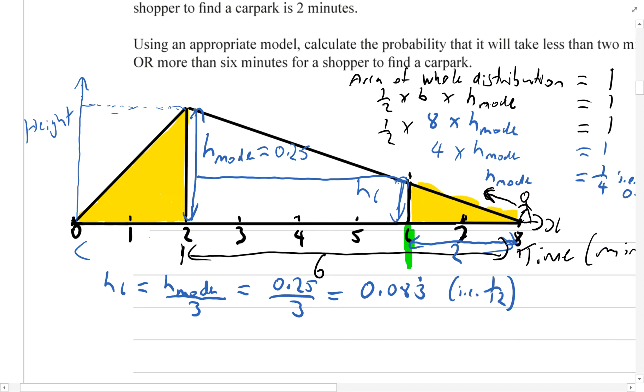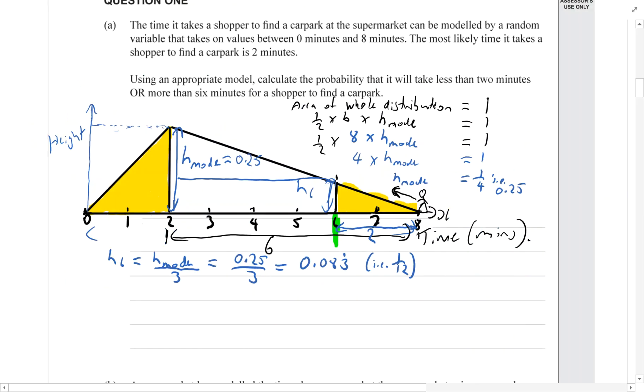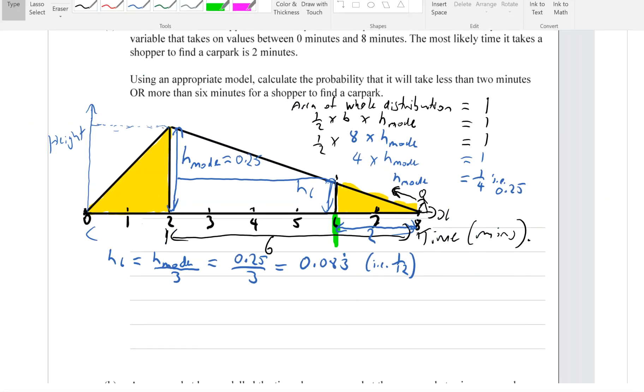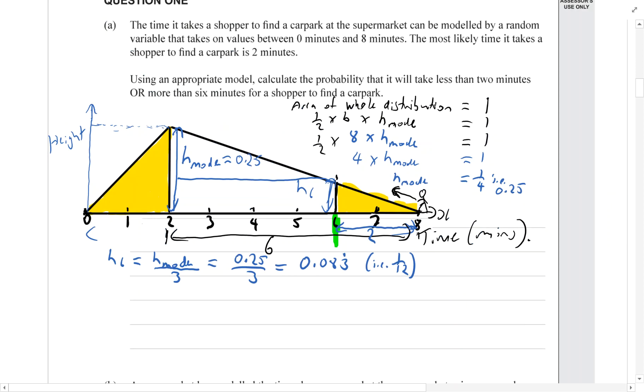So now I've got everything I need. I just want to work out those two yellow regions. I want to work out the areas. And then I'm going to add them. The question said to find the probability that it will take less than two minutes or more than six minutes.